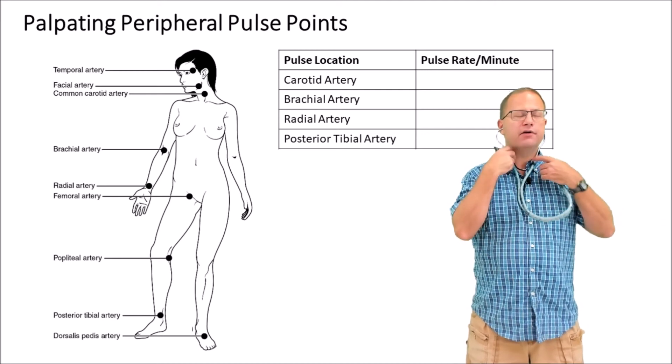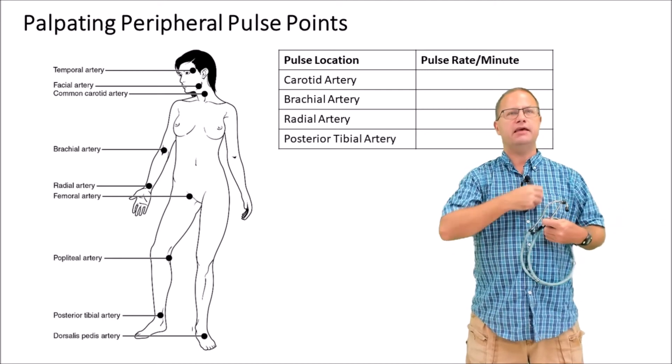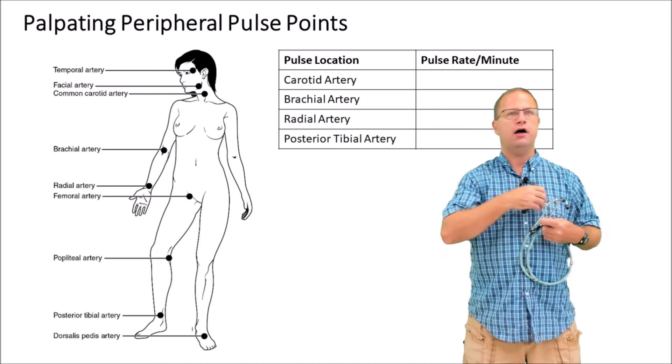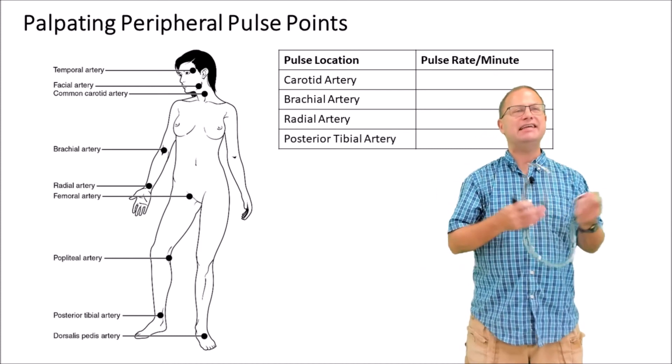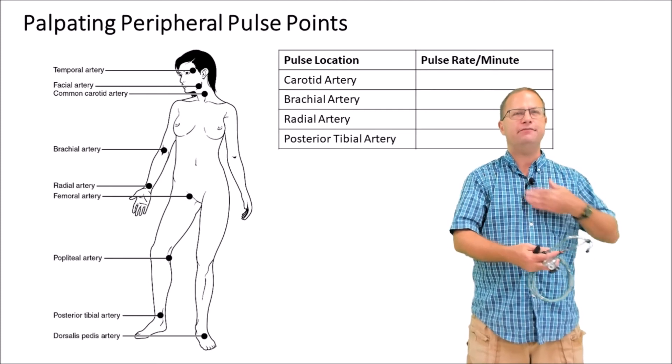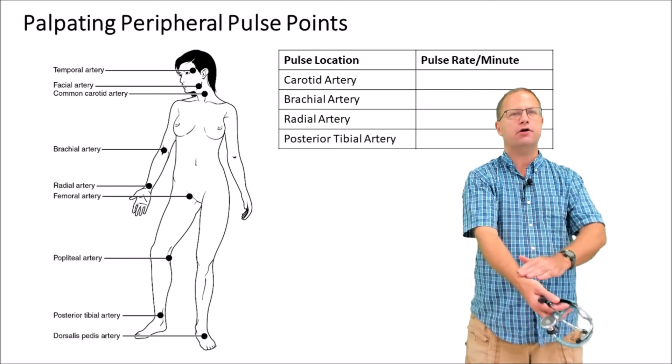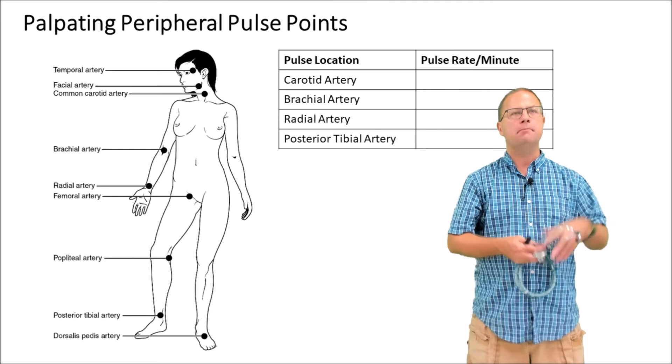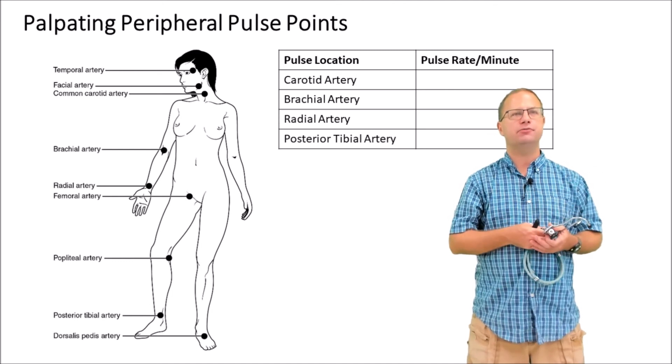You will notice there's probably going to be a delay, a bump and then a wish. These are waves and it takes time for the blood to get from that left ventricle all the way down to the radial artery. But ideally these two pulse numbers should be the same.